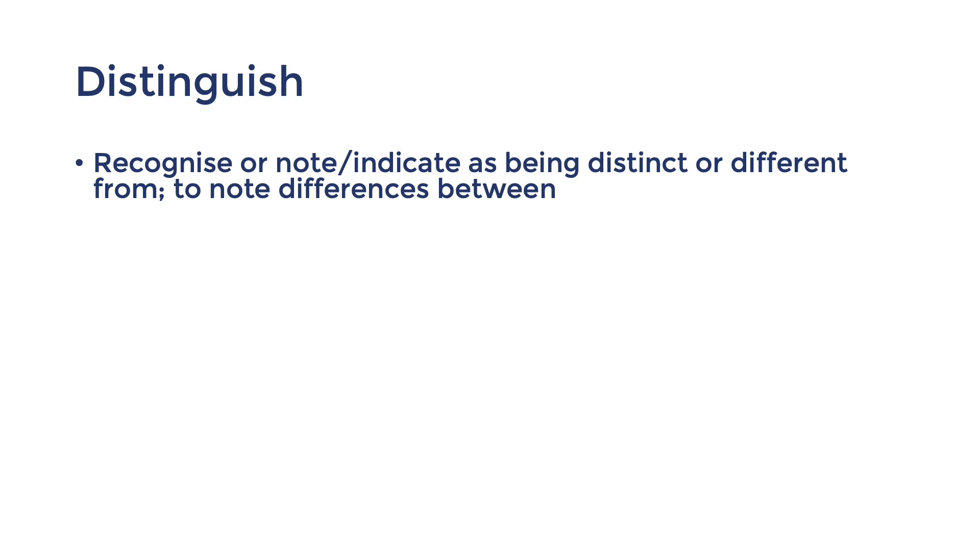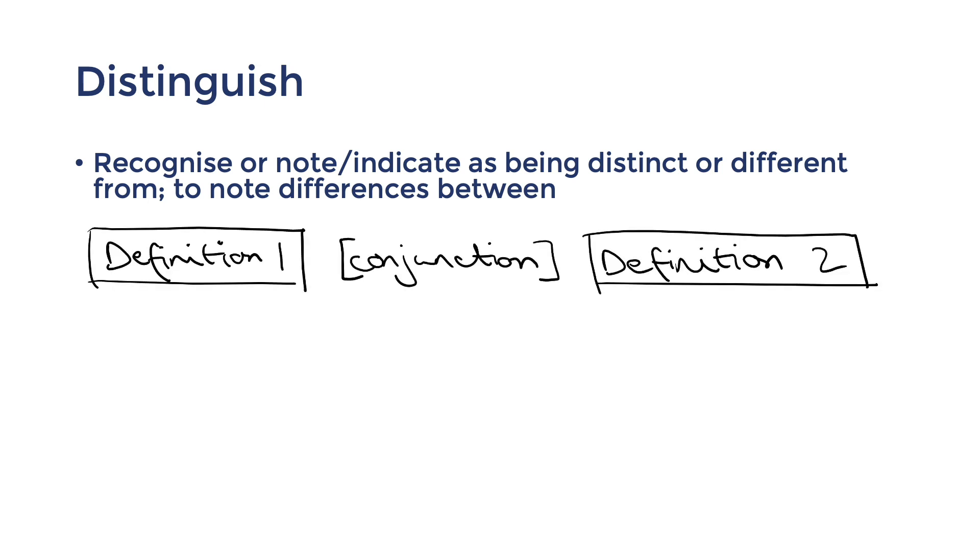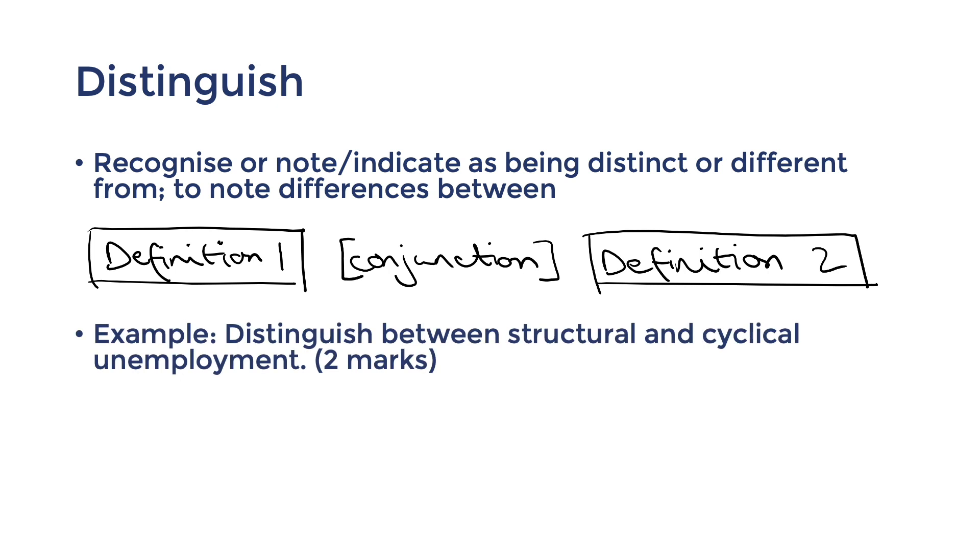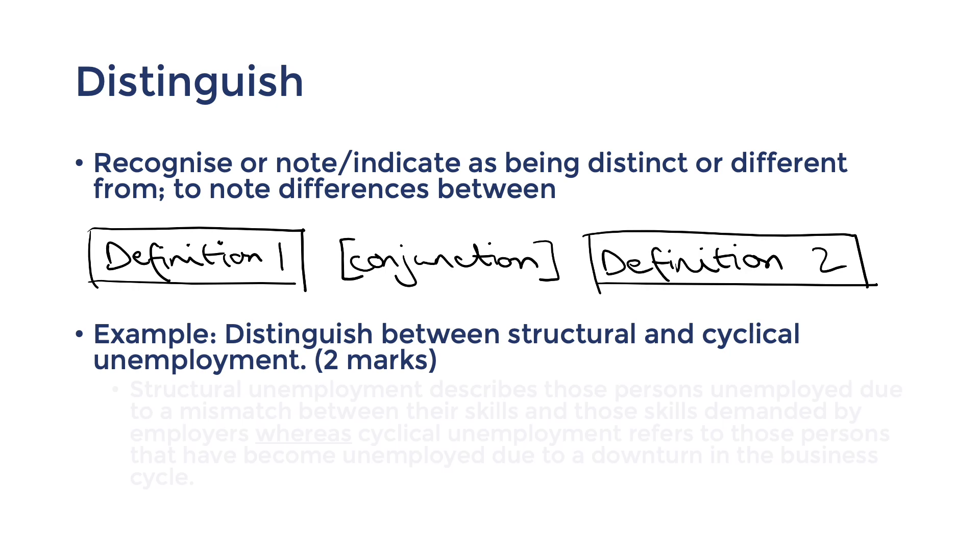Next, a common two mark question in economics is distinguish. This means to recognize as being distinct or different from or to note differences in between. A simple way of approaching distinguish questions is by providing definitions of the two terms and then putting a conjunction in between them like whereas, however, conversely, on the other hand and so on. Let's try this HSC question from 2020. Distinguish between structural and cyclical unemployment for two marks. And here's the sample answer from the marking guide. As you can see, they start with a definition of structural unemployment with the essential characteristics. They then put in a conjunction word, whereas. And here's the definition of cyclical unemployment. Boom, easy two marks. Again, get good at this type of question by accurately memorizing definitions.